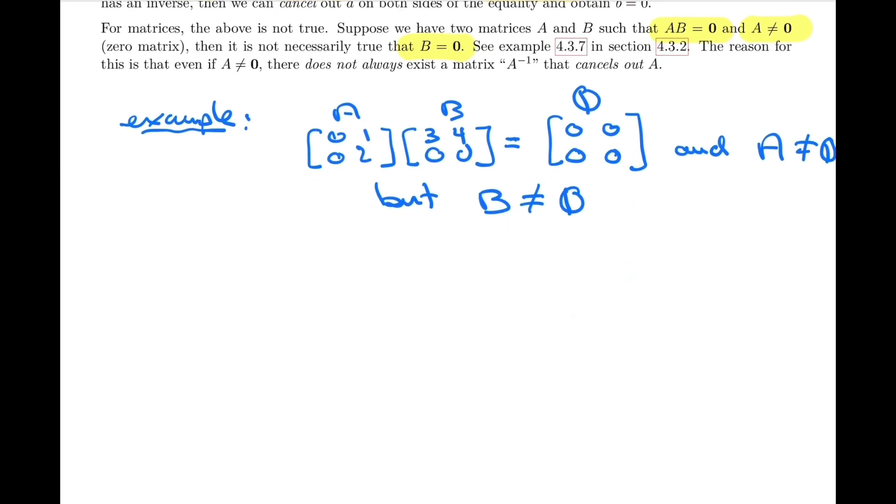And why is this the case in this example? Well, simply because this matrix A, in this example, does not have an inverse. If it did, if A was invertible, so this is terminology we're going to be using in the next section, if A was invertible, i.e. if A inverse existed, and in this case it doesn't, then how would that change things?